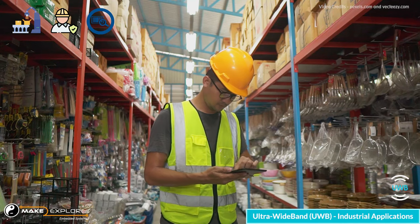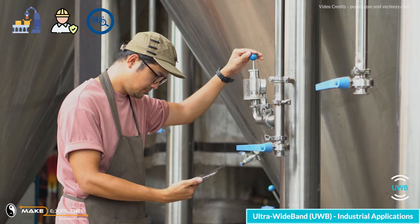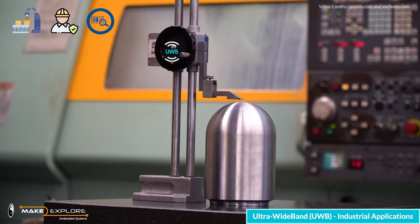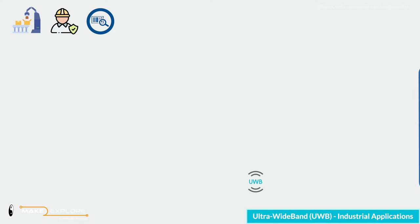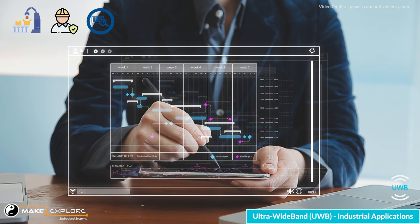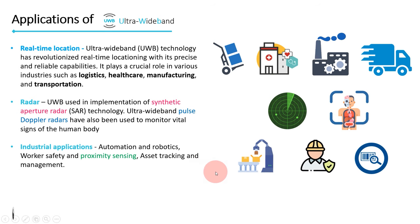Efficient asset tracking and management are crucial for industrial operations. UWB enables precise and real-time tracking of assets within industrial facilities. By attaching UWB tags to equipment, tools, and inventory, companies can monitor their location, movement, and utilization. This enhances inventory management, reduces asset loss, minimizes downtime, and streamlines maintenance processes. UWB-based asset tracking systems provide accurate and reliable data, empowering businesses to optimize their resource allocation and improve overall operational efficiency.